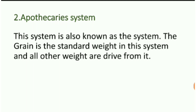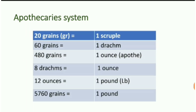Apothecary system: this system is also known as the troy system. The grain is the standard weight in this system and all other weights are derived from it. Conversion table: 20 grains (gr) is equal to 1 scruple; 60 grains is equal to 1 drachm; 480 grains is equal to 1 ounce; 8 drachms is equal to 1 ounce; 12 ounces is equal to 1 pound; and 5760 grains is equal to 1 pound.